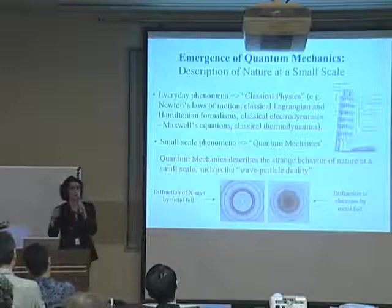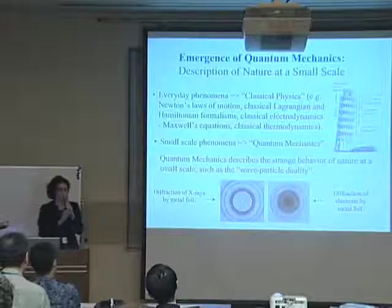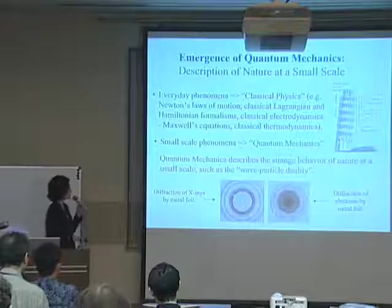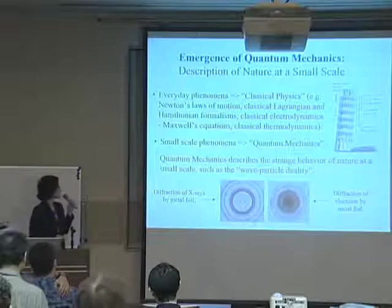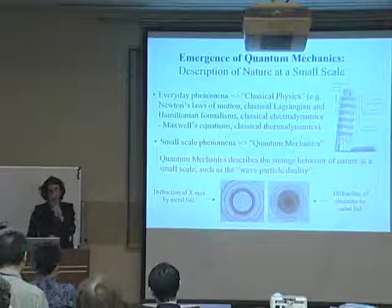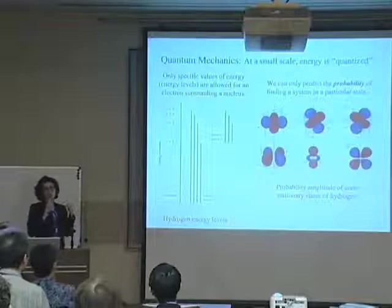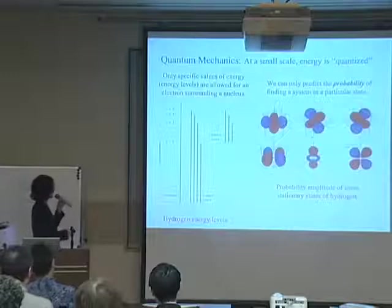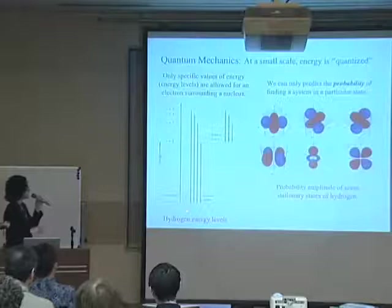What you see here is a diffraction pattern that represents the diffraction of x-rays — which are definitely waves — going through a metal foil. If instead of x-rays we have electrons, which are particles, go through that metal foil, we get a diffraction pattern that looks almost identical. Another characteristic of quantum mechanics is that energy is quantized — energy can only exist as discrete packets. What you see here are the energy levels of the hydrogen atom, and an electron is only allowed to exist on one of these discrete levels, not anywhere in between.